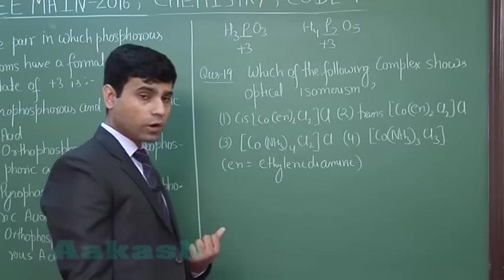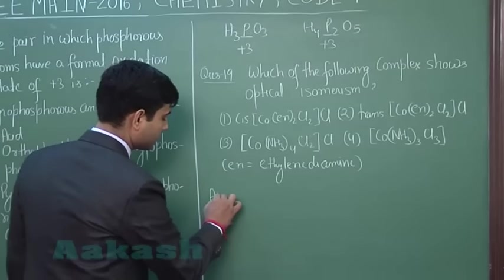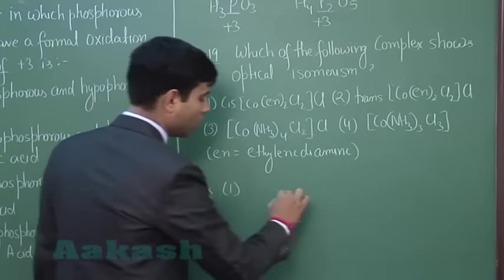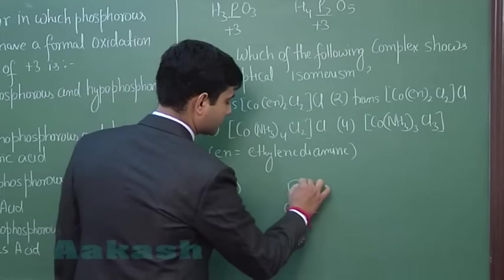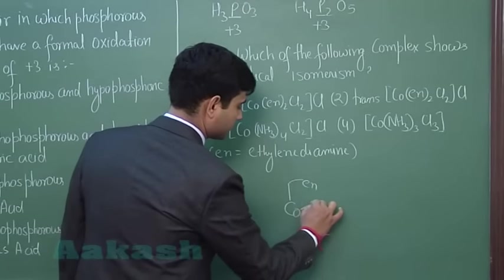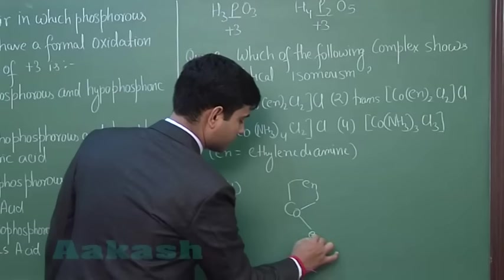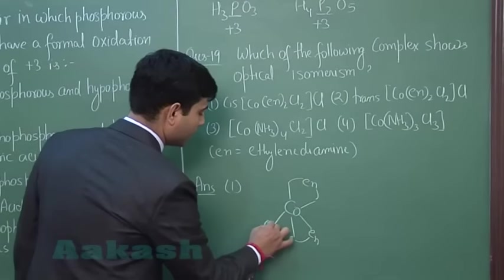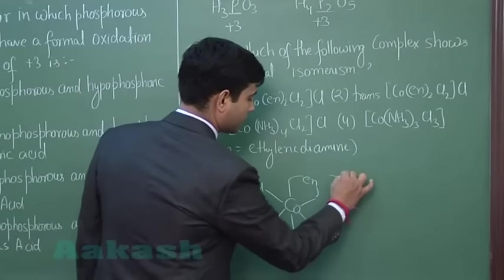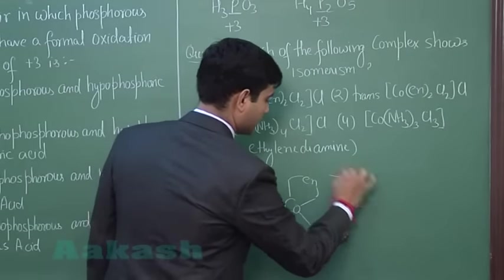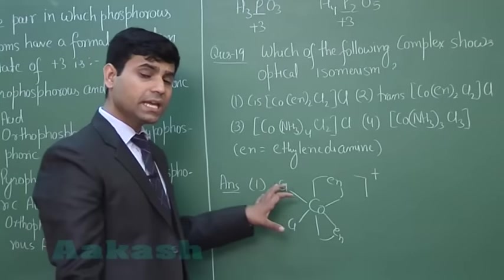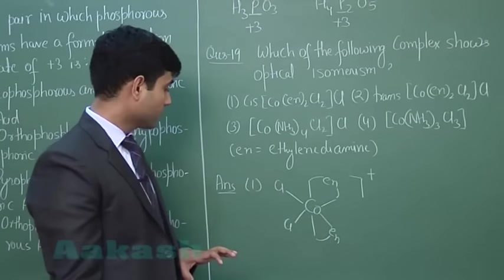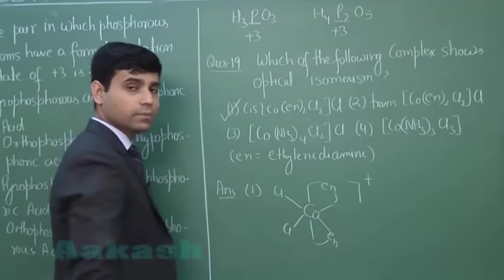Considering option number 1, which is cis-[en]₂Cl₂: we can see there is no element of symmetry in this compound. Because it lacks any element of symmetry, it will show optical isomerism. Hence, the correct answer for this question is option number 1.